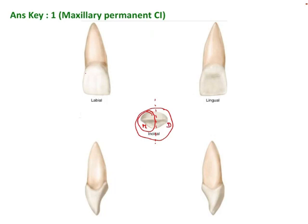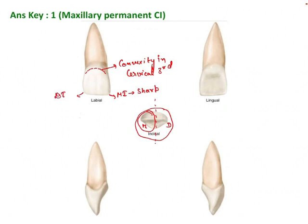In the labial view, there is convexity in the cervical third. Another important feature is the mesio-incisal angle, which is sharp, while the disto-incisal angle is rounded. The overall tooth shape is almost quadrilateral or pentagonal. Coming to the lingual view, the cingulum is well developed, and the tooth of course appears to be shovel-shaped.